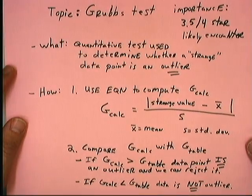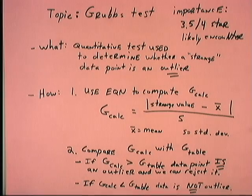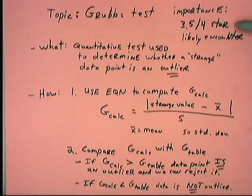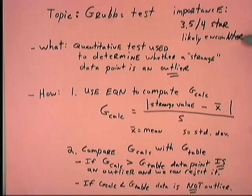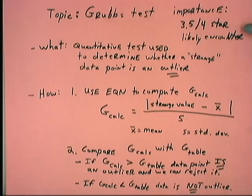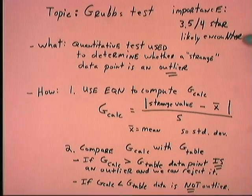In this video lecture, we are going to consider a topic known as the Grubbs Test. The Grubbs Test is a topic of reasonable importance — I would rate it 3.5 out of 4 stars. You are likely to encounter a problem like this either on a semester exam or on your standardized final. You might have a Grubbs Test problem or a related type called a Q-Test. It's very common to see this type of problem on standardized exams.